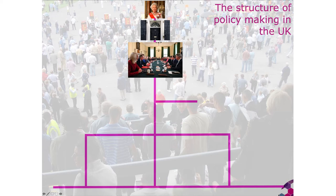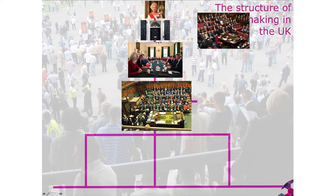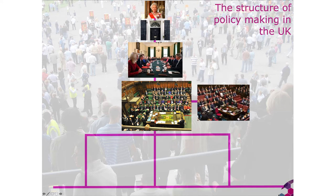The Prime Minister alongside his cabinet makes key decisions and develops key policies, and these policies come from the House of Commons and the House of Lords as the two key chambers of the UK Parliament.